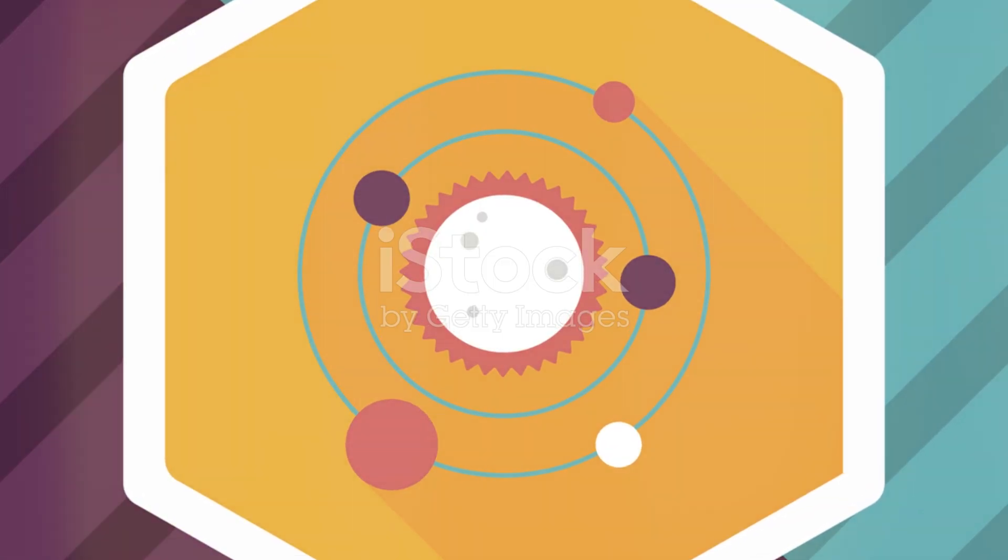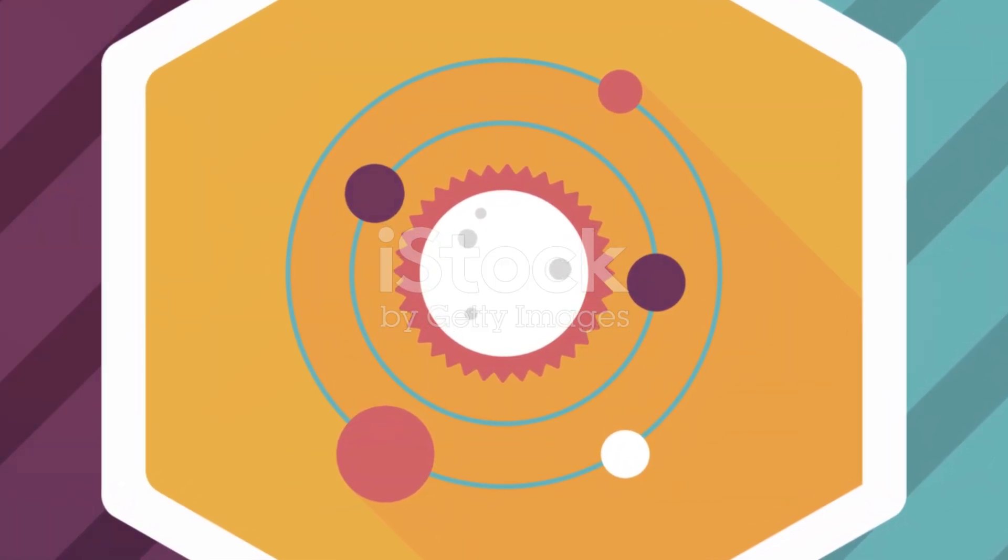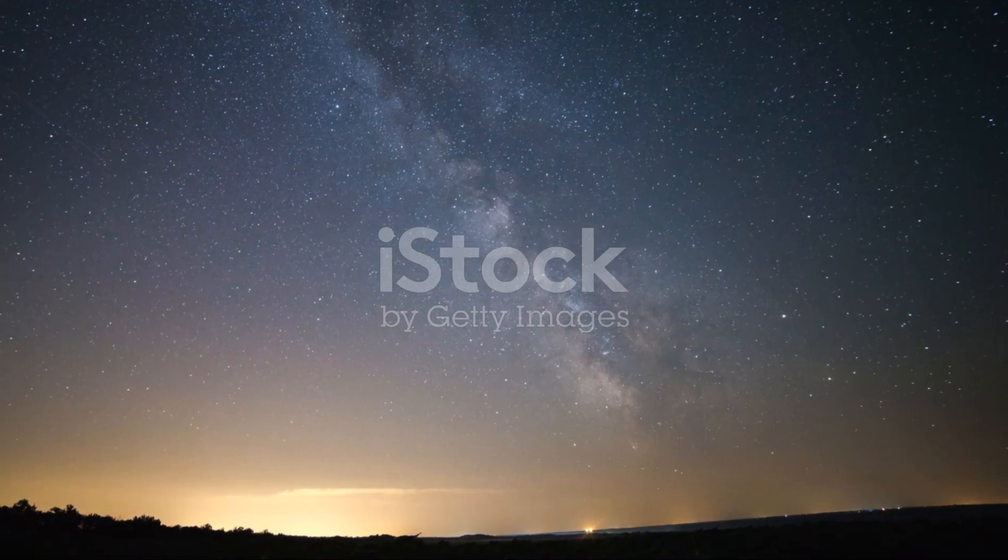Betelgeuse is part of the Winter Hexagon, a prominent asterism in the winter sky, making it easily identifiable for stargazers.